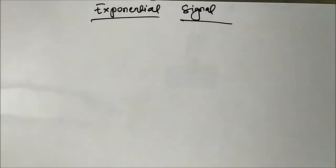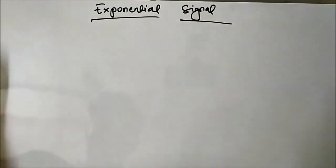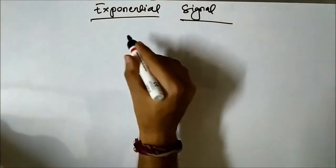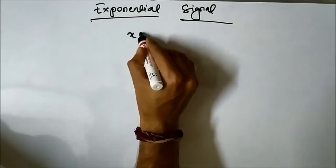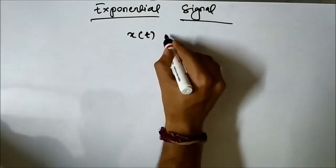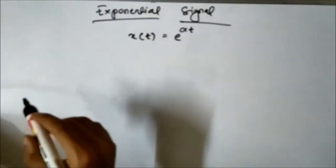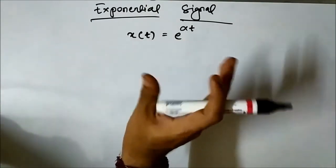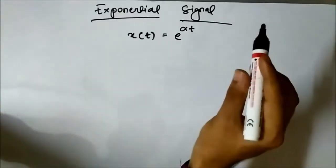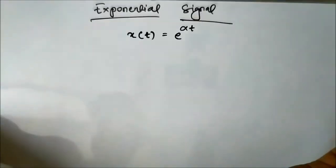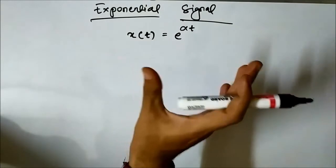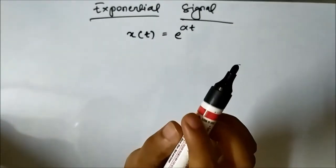Hello friends, welcome to Engineering Tutorial. In today's video we are going to discuss about another basic elementary signal which is the exponential signal. The exponential signal is represented as e to the power alpha t. This is the basic representation of the exponential signal, and its waveform can be studied under three headings.